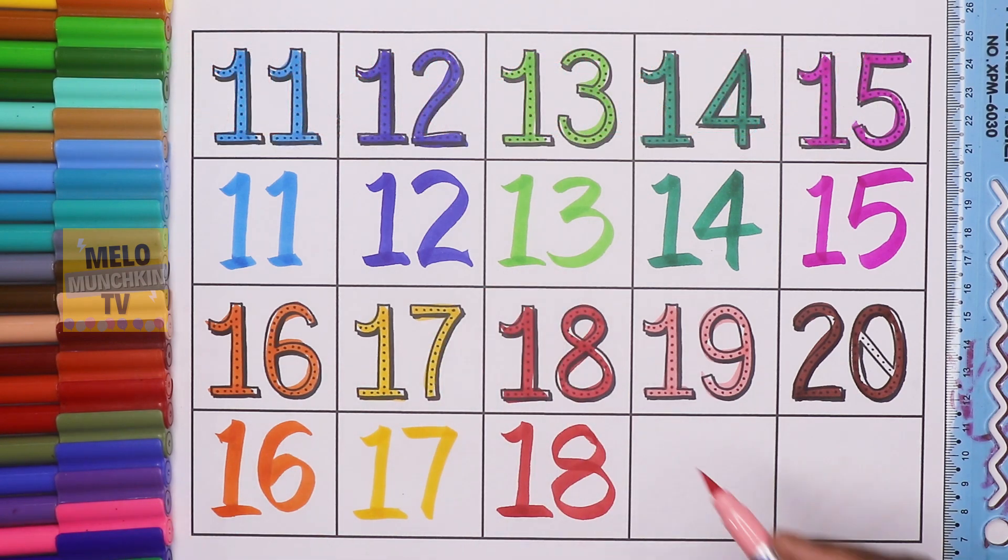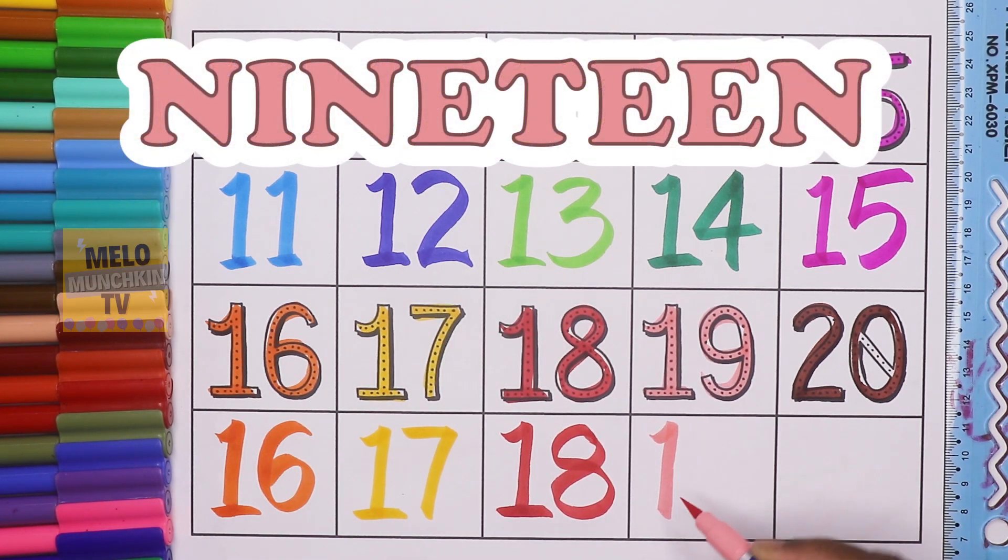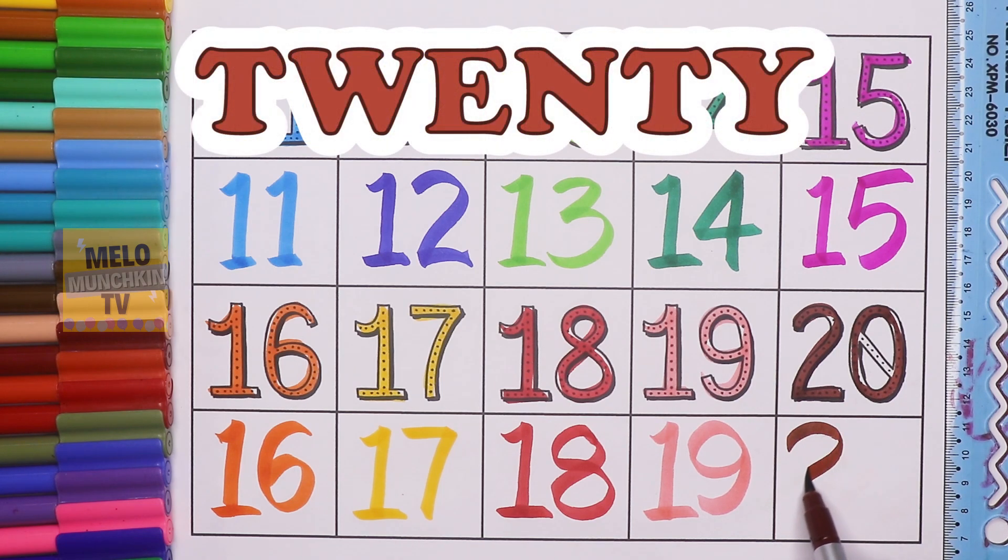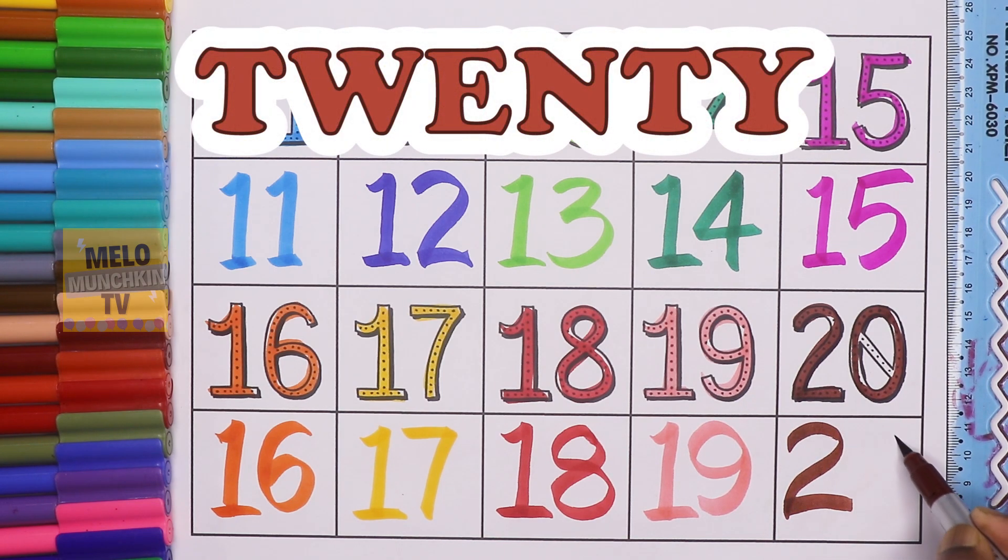This is red color. 19, N, I, N, E, T, E, N, 19. This is light pink color. 20, T, W, E, N, T, Y, 20.